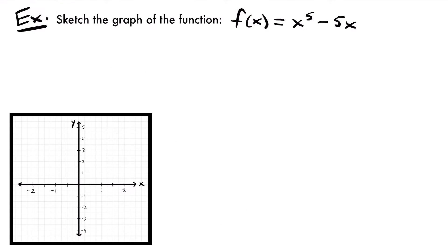Welcome back. We're going to be looking at this example today. We want to sketch the graph of the function f of x equals x to the fifth power minus 5x. In order to sketch the graph of a function, there's going to be a series of steps that we're going to want to go through. The first thing we want to do is determine the domain of our function — what values of x is our function defined for — so that we have a better idea of where we're going to be graphing it. We have a graph down here that we will be using to sketch the function, and we'll add things to that graph as we move along with each step.